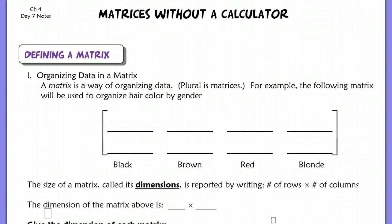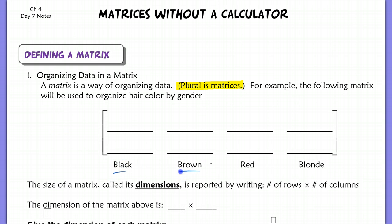First, just to define a matrix — all that a matrix does is organize data. You heard me say the word matrices; that's the plural of matrix. So if we were going to organize some information, we say: let's count up the number of male students with black, brown, red, or blonde hair, and then we do the same thing for the girls. So a matrix is a shorthand way of basically organizing that information.